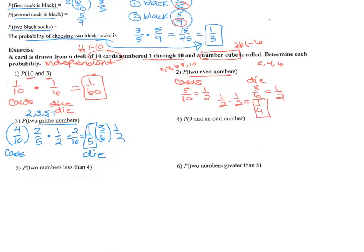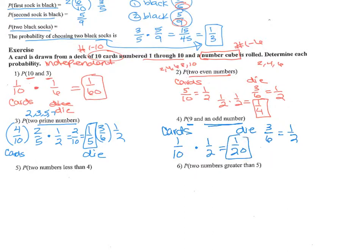Number four: the probability of landing on a nine and an odd number. For the cards, what's the chance of landing on card number nine out of one through ten? That's one out of ten — there's only one number nine card. On the dice, the odd numbers give three out of six. Multiplying those together gives one over twenty.